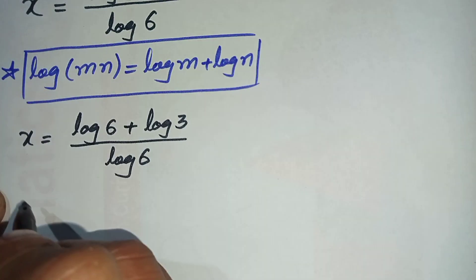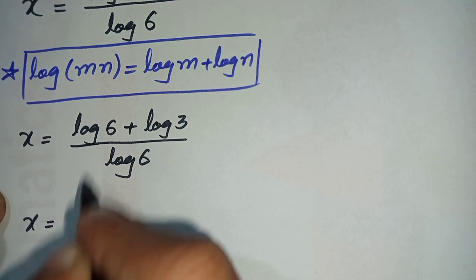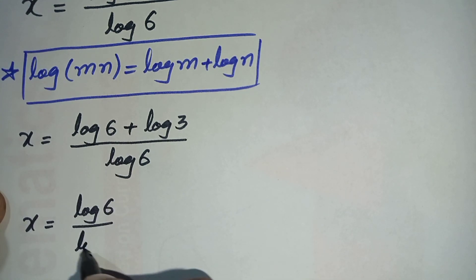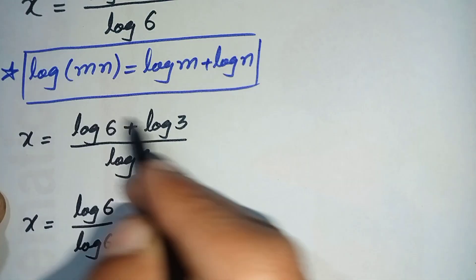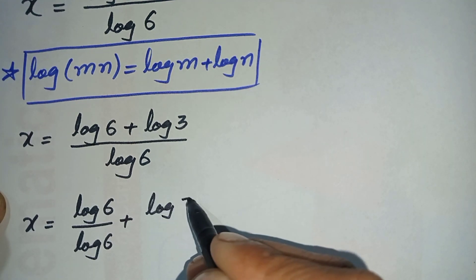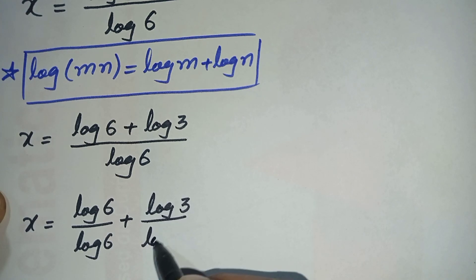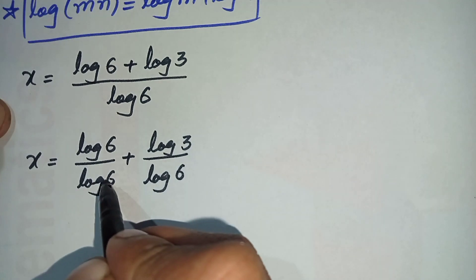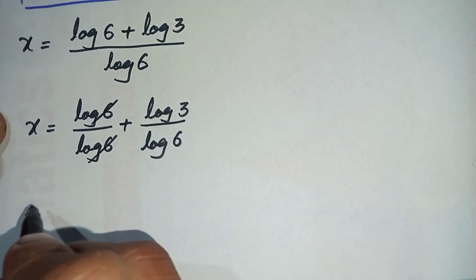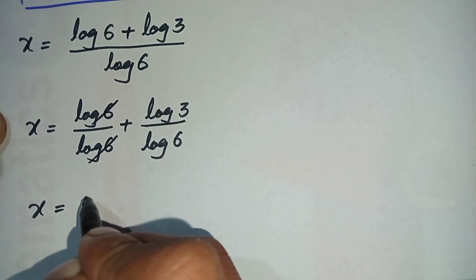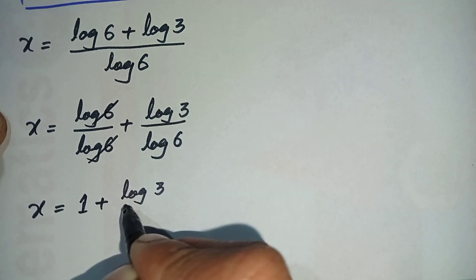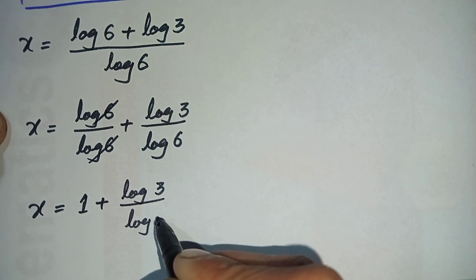We can rewrite the right hand side by dividing both terms in the numerator by log of 6: x is equal to log of 6 divided by log of 6, plus log of 3 divided by log of 6. This log of 6 and that log of 6 cancel, leaving 1, so x is equal to 1 plus log of 3 divided by log of 6.